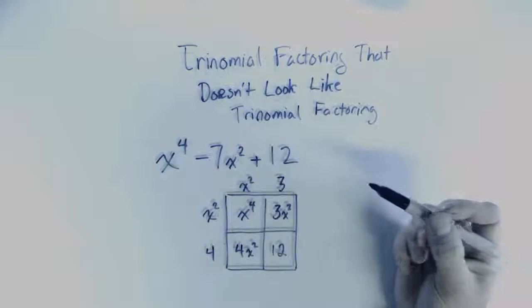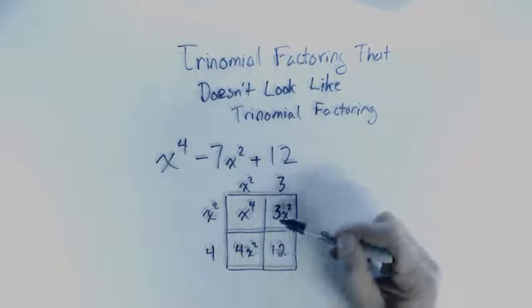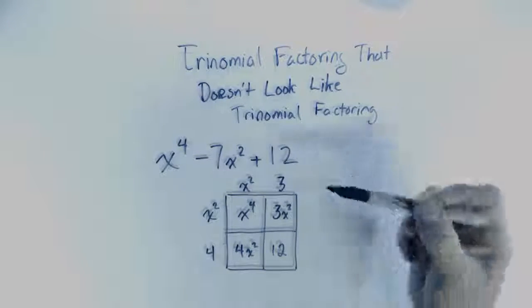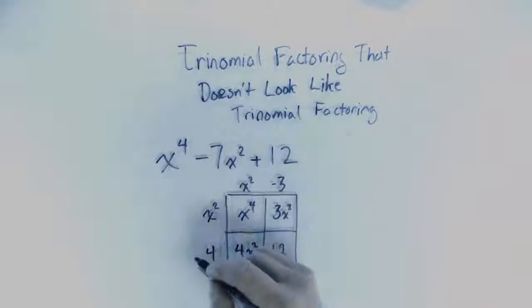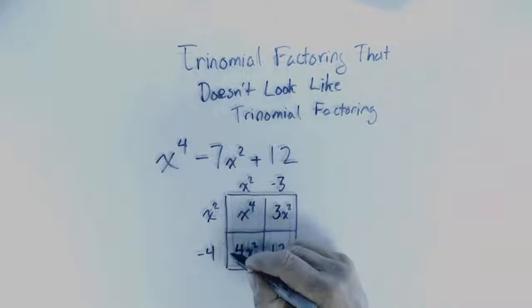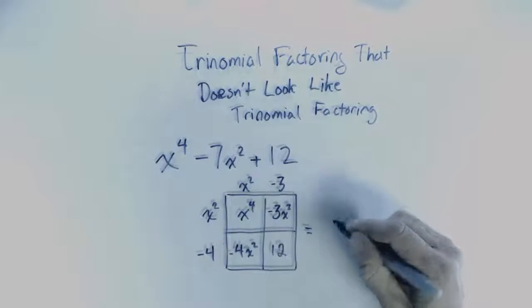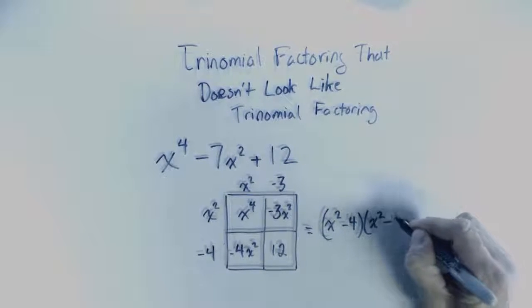And so if I added this entire expression together, I would get x to the exponent 4 plus 7x squared plus 12. And I see that I need a minus 7x squared, so I just have to tweak this with negative signs. And so I can actually see that this is x squared minus 4 times x squared minus 3.